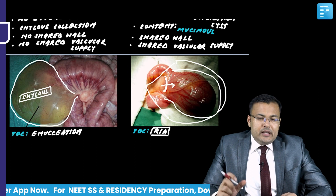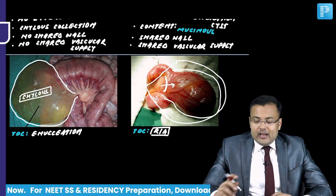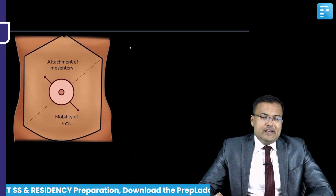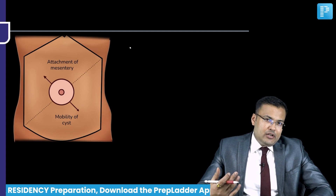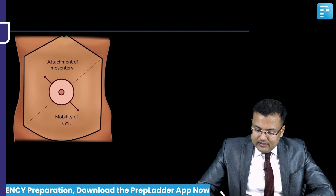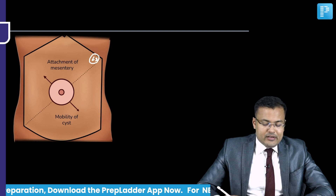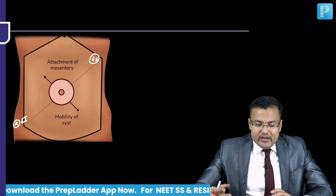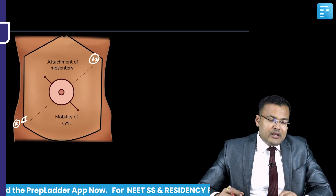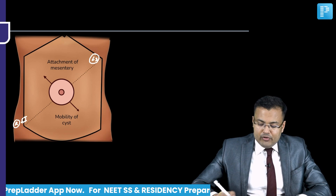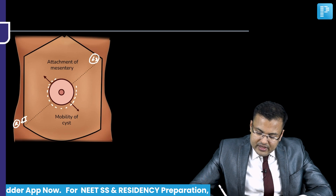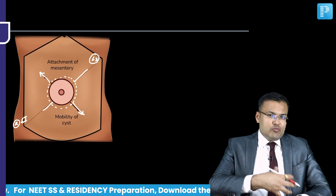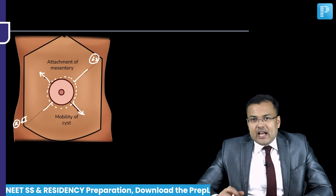Coming to clinical features: since it is extraluminal, majority of patients are asymptomatic. When the size of cyst increases, patients have abdominal distension and a palpable intra-abdominal mass. Regarding anatomy, mesentery starts from L2 on the left side and goes to the right sacroiliac joint - it is a fan-shaped structure. The cyst moves perpendicular to the attachment of mesentery, and this sign is known as Tillaux sign.